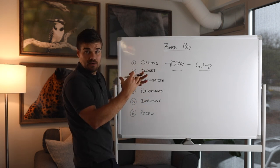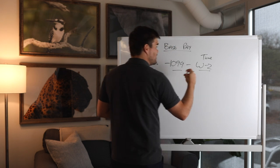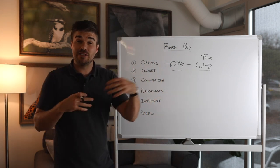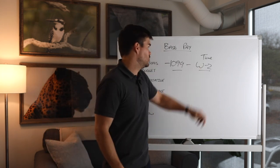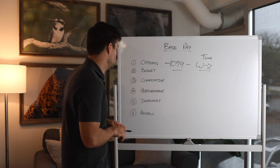And how do we kind of distinguish that? We can look at time is a big factor. So if someone is more short-term, kind of project-oriented, we'll tend towards 1099. If someone is longer-term, ongoing, we'll tend towards W2. Really trying to look at the outcome that we're trying to achieve with employing this person.